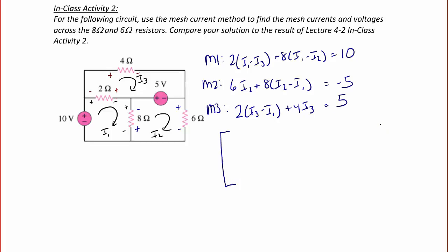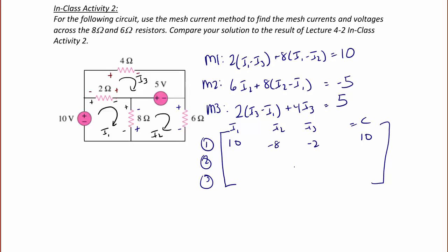Just as we did before, we're now going to make a 3 by 4 matrix where the rows are the 3 KVL equations and the columns are the coefficients on I1, I2, I3, and the constant on the right side of the equal sign. So the matrix is: row 1 is 10, negative 8, negative 2, 10. For row 2, it's negative 8, 14, 0, negative 5. And for row 3, it's negative 2, 0, 6, and positive 5.